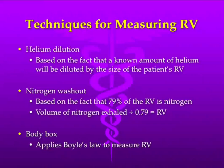Body box is easier to say than body plethysmography. It applies Boyle's Law and is the most accurate of the three. The other two — helium dilution and nitrogen washout — can only measure with communicating airways. If you have significant air trapping, the helium is not going to get there, or the nitrogen is not going to wash out. Therefore, those measurements are not 100% accurate.